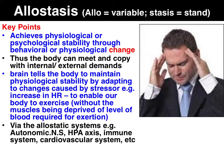Allostasis achieves physiological or psychological stability through behavioral or physiological change, enabling the body to meet the internal and external demands placed on it. The key point about allostasis is the brain tells the body to maintain physiological stability by adapting to changes in the environment — that is, the stress source — so we can adjust in a beneficial way, reducing the injury or harm from internal or external forces.